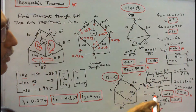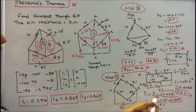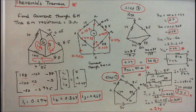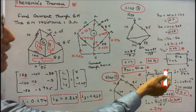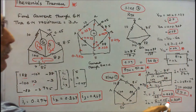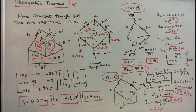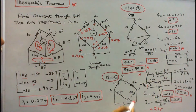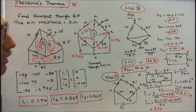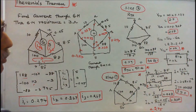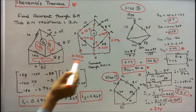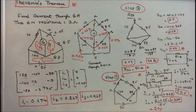I1 equals 5 divided by 100 plus 88, which is 188, giving 0.027 amperes. I2 equals 5 minus 0.05 divided by 10 plus 8.5, which is 18.5, giving 0.268 amperes. The total current towards the junction is 0.027 plus 0.268 equals 0.295, which is approximately 0.294.